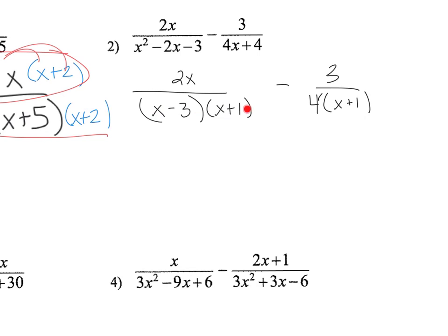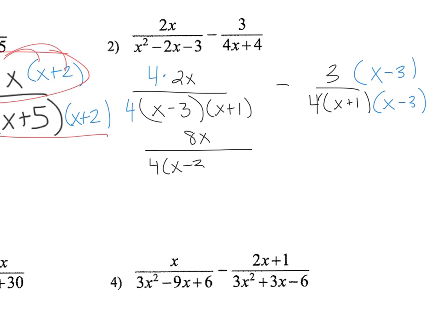So here, if my denominator is x minus 3 times x plus 1, and the other is 4 times x plus 1, I need to multiply a 4 on the top and the bottom over here. And then over here, I need to multiply an x minus 3 to the numerator and denominator. So the left-hand side fraction becomes 8x over 4 times x minus 3 times x plus 1.